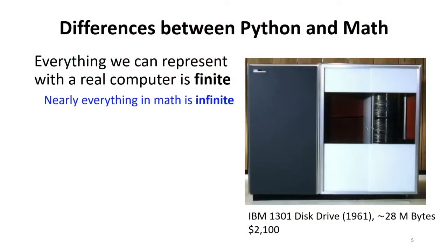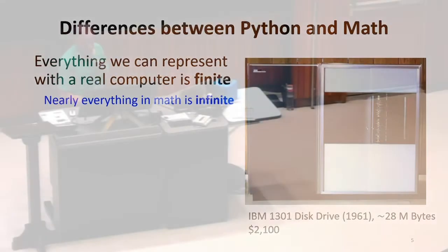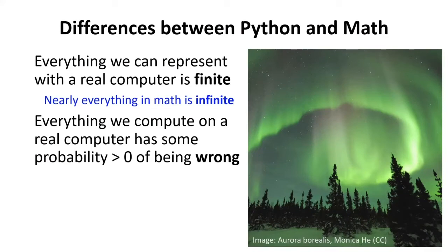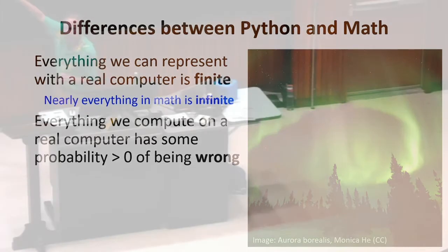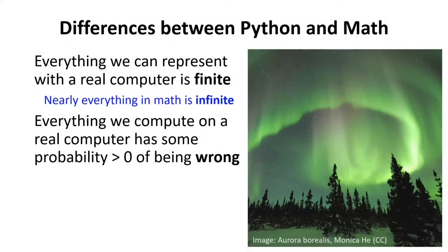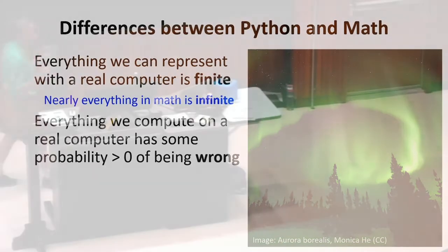The other difference I want to highlight between math and computers is about correctness. Everything that we compute on a real computer, anything that we're computing using physical stuff, has some non-zero probability of being incorrect. Even if it's within the range of things we can store correctly and we're not running into memory, there are cosmic rays. Cosmic rays are hitting the Earth all the time. If they hit memory of your processor in the wrong place at the wrong time, they flip a bit. Any physical computer is vulnerable potentially to these kinds of things and they can make it wrong.